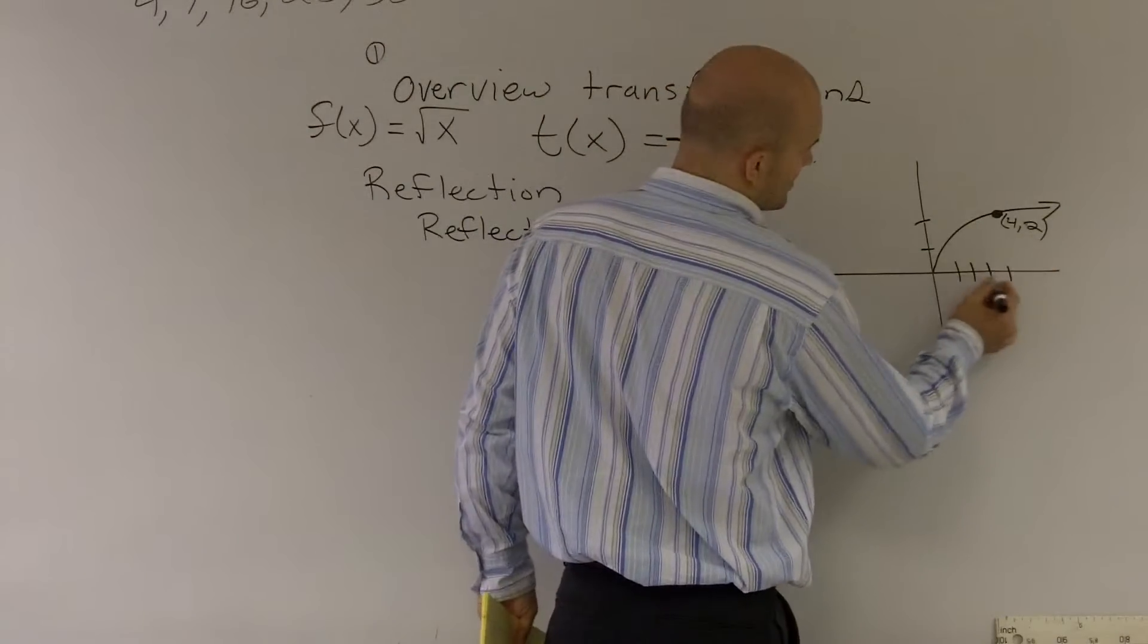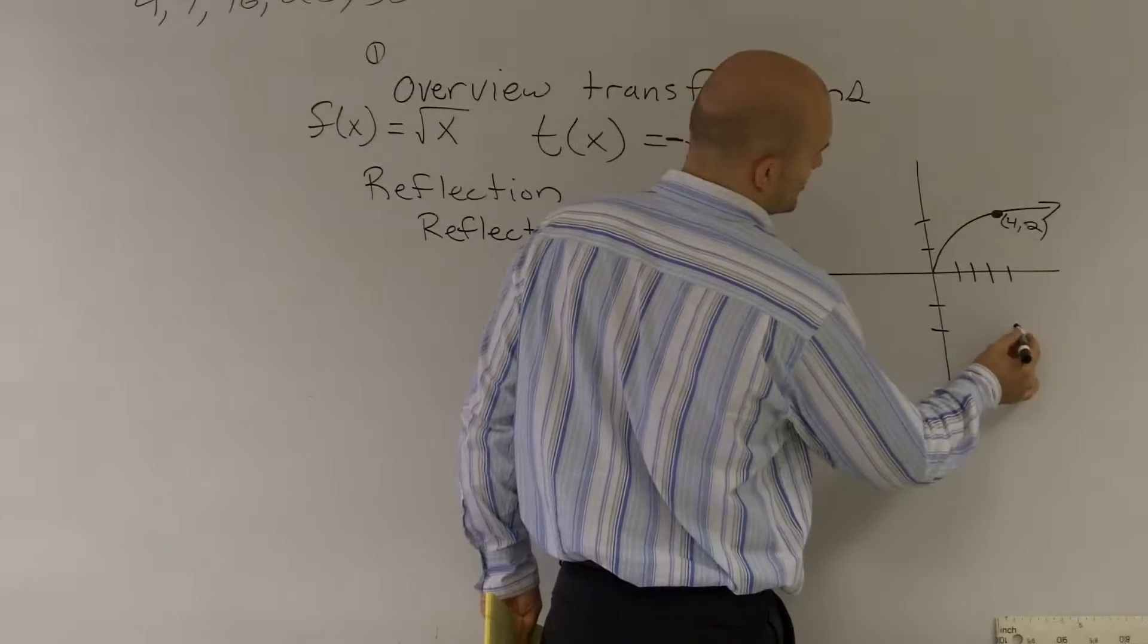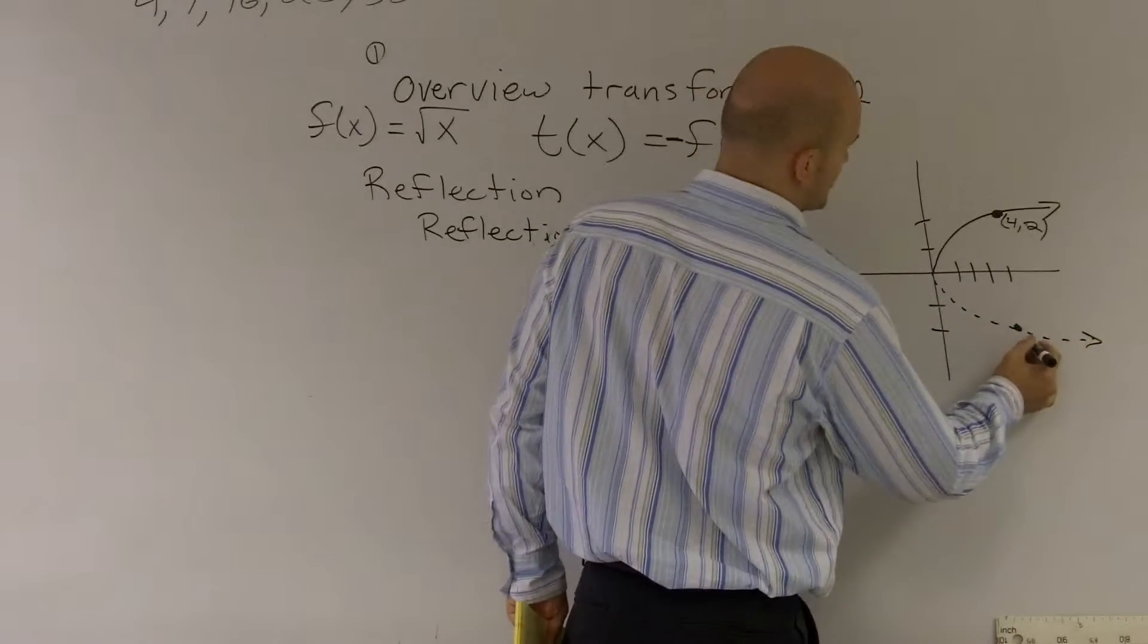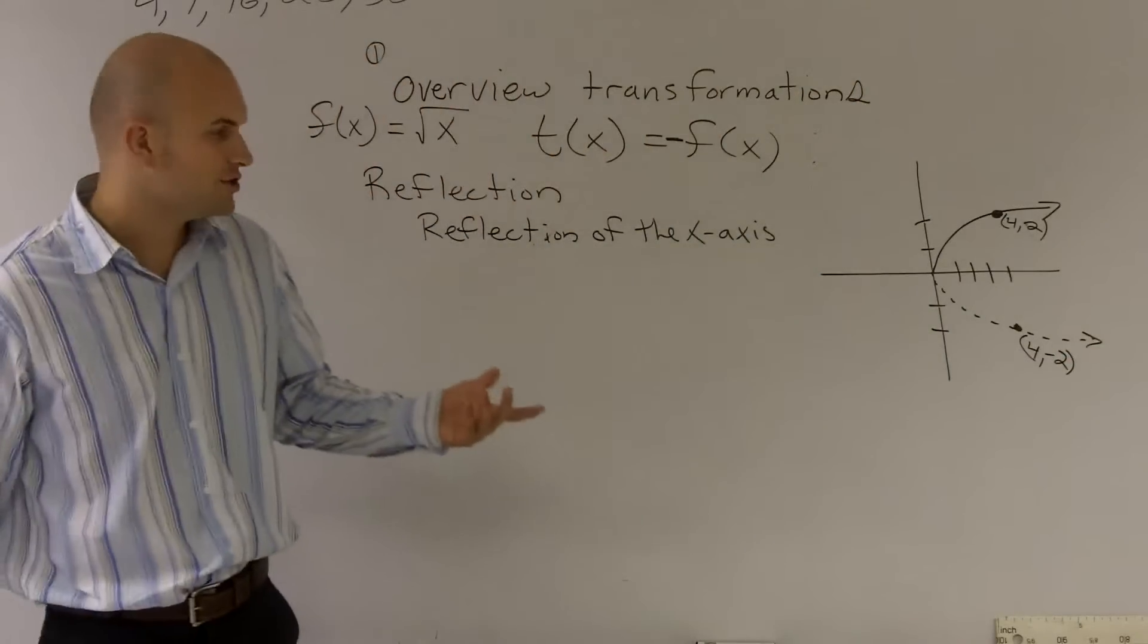So what we're doing is, instead of up 4, now we're going down 2. I'm sorry, instead of up 2, now we're going down 2. So it's still going to be positive 4, but now you're going to have a negative 2.